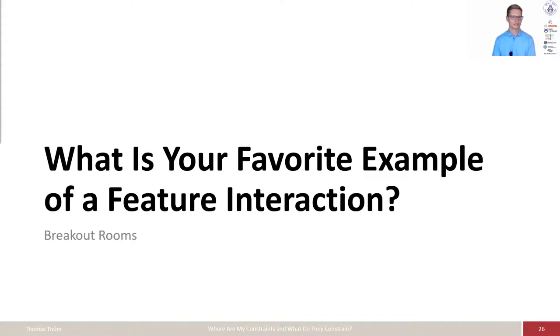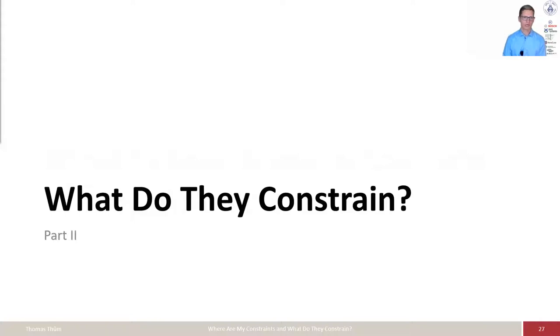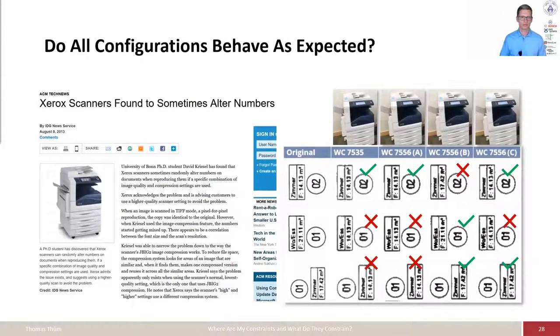Let's continue with the talk. Ideally, you have heard of some feature interaction that you were not aware of. In the next part, I would like to talk about what is the meaning of constraints and why does it matter and how can we find out about that meaning? So what are those constraints actually constrained? Why does it matter?